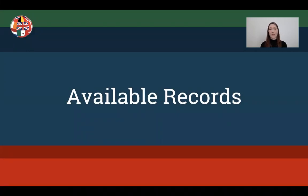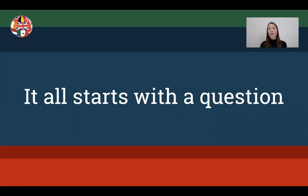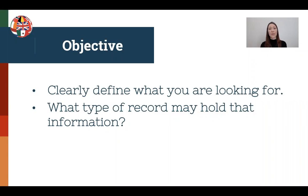The second half of the definition of locality research is finding the available records for your time period. All of our research starts with a question — that's our objective. Our objective needs to be clearly defined. We need a target to hit; we can't just throw a net out there and see what we catch. Then we ask ourselves what type of record might hold that information.